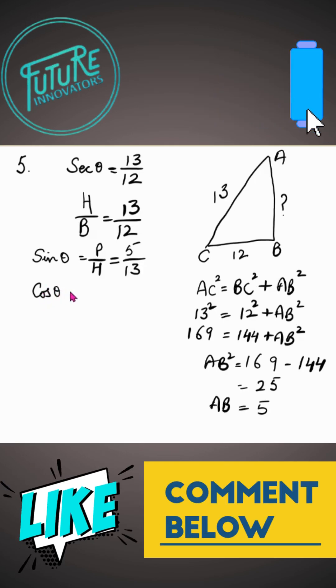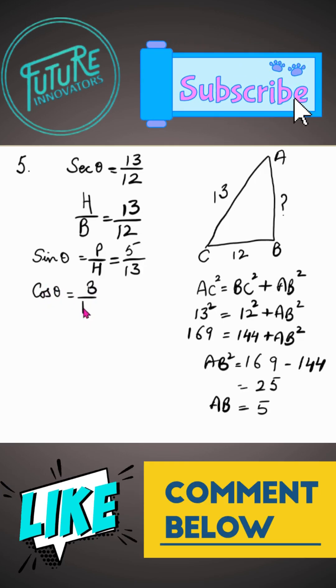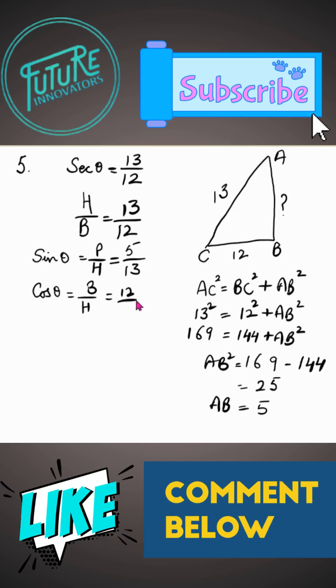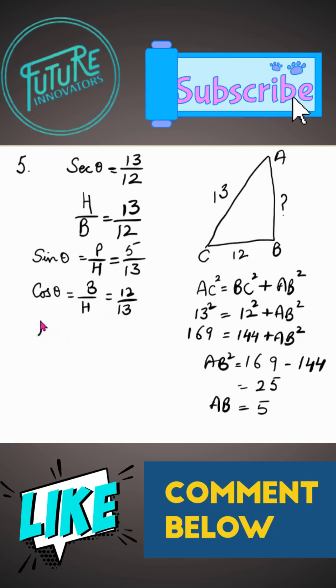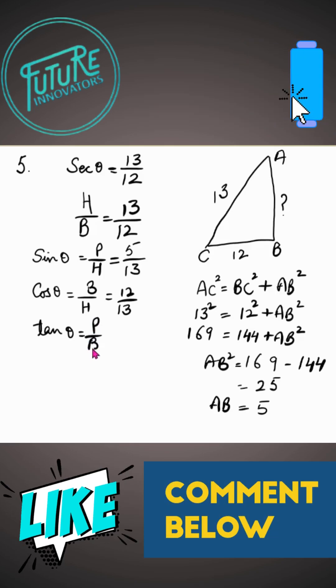Then cos theta is B upon H. Base is 12 and hypotenuse is 13. Now tan theta, tan theta is P upon B.